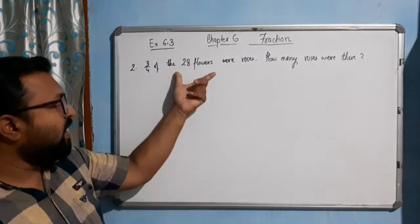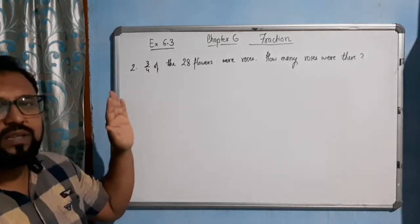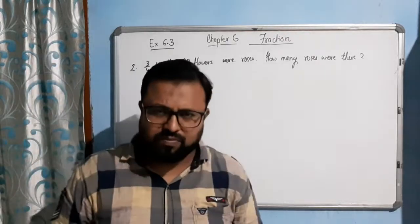Means out of twenty-eight flowers, three by fourth are what? Roses and rest of the flowers are different flowers.